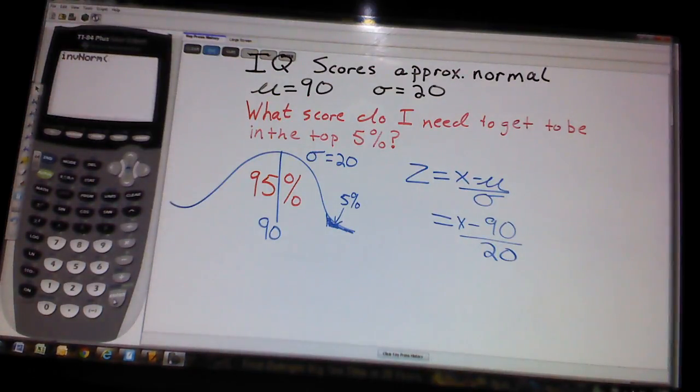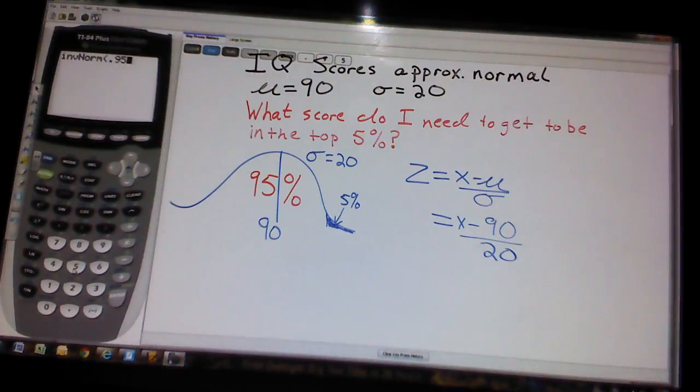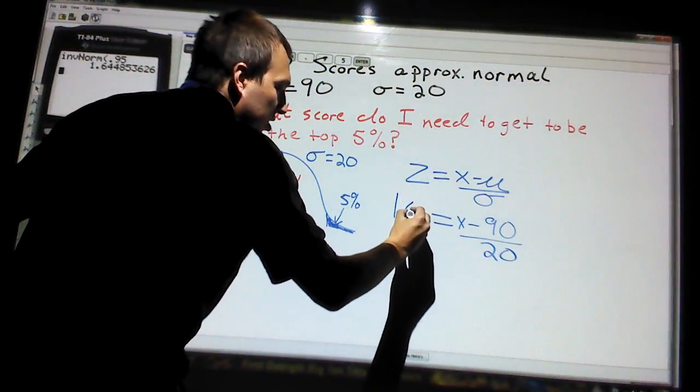Yours is going to say area, so you type in .95, make sure it's not 95. If you type in 95, it's going to give you an error message. Type in .95, go ahead down and hit paste, and enter, enter. We get a z-score of 1.64, so we plug that in, 1.64.